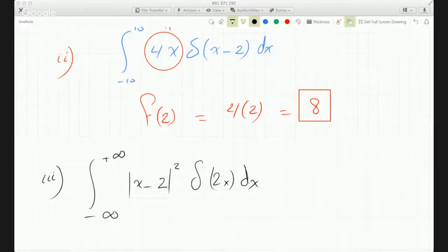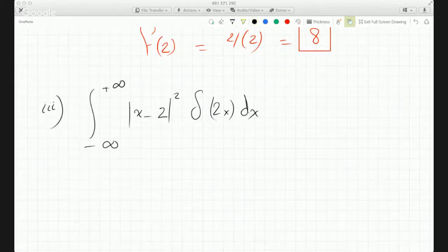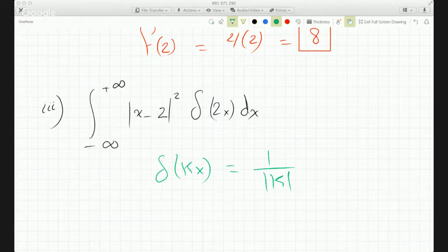So here what changed is instead of having Dirac delta function of x, you have Dirac delta function of 2x. Now, if you look in your book, there's a formula that says the Dirac delta function of kx becomes—it's actually a question you're supposed to prove—it's 1 over |k| times the Dirac delta function of x.